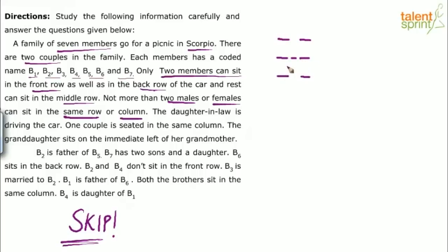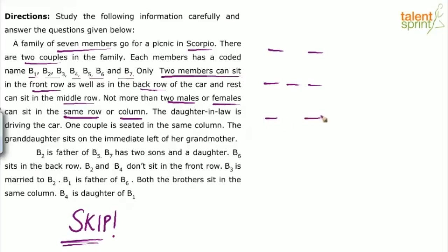This is the only way it can be arranged — there is no other possibility. So 2 seats in the front row, 3 in the middle row, and 2 in the back row. Not more than 2 males or females can sit in the same row or same column.